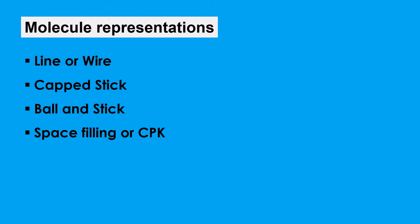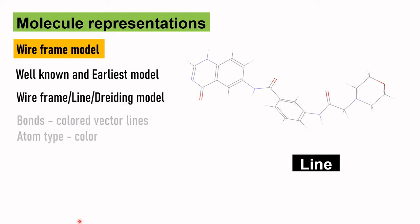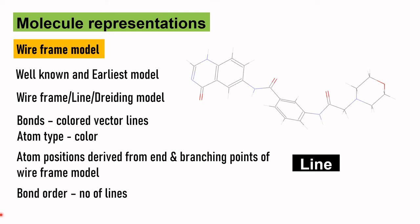What are the different molecular representations? Line or wire, capped stick, ball and stick, space filling or CPK. These representations are used for only small molecules, that means molecules which have low molecular weight. The first one is the wire frame model. This is how a wire frame model looks like. This is the most well-known and earliest computer model for a molecular structure. It is also known as line model or Dreiding model. The bonds of the molecule are represented by colored vector lines, and the color is based on the atom type. It does not display the atoms, but the atom positions are derived from the end and branching points of the wire frame model. The bond orders between two atoms are given by the number of lines. For a double bond, it is represented by two lines, and a single bond is a single line.